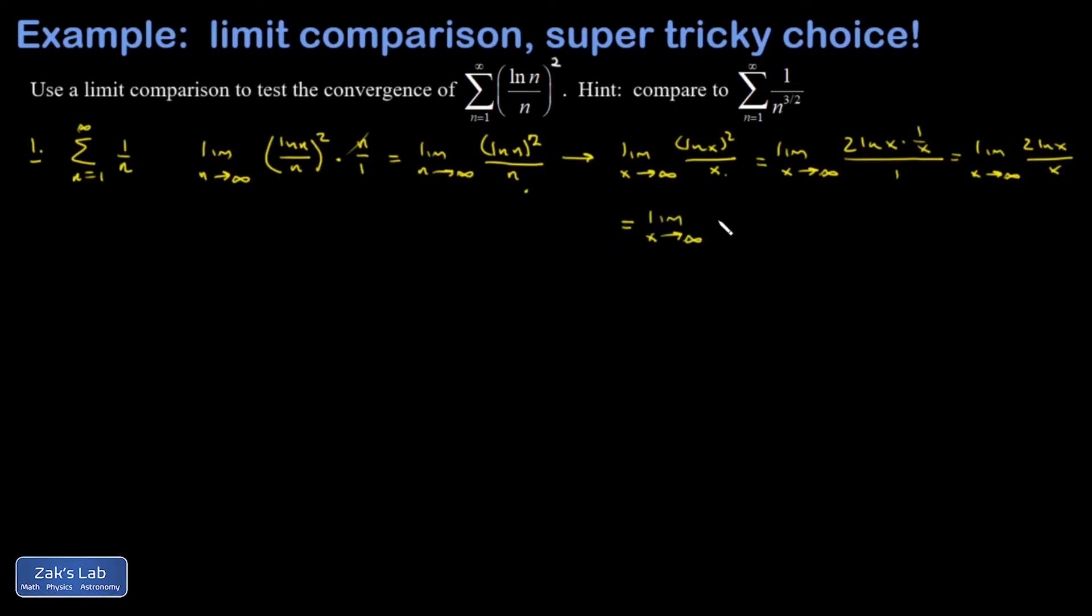So I've got to go again. And I end up with two times derivative of natural log of x. That's one over x over one, which gives me a two over x. And the limit as x goes to infinity, which is going to go to zero.